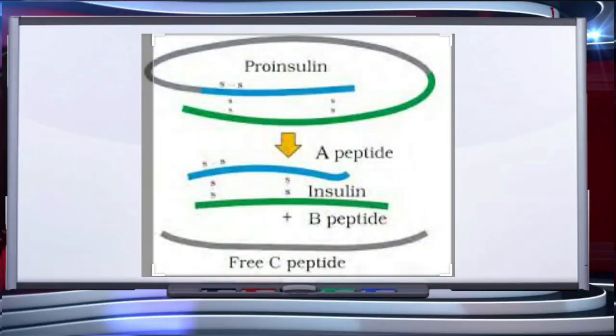Insulin used for diabetes was earlier extracted from the pancreas of slaughtered cattle and pigs, which caused allergy or other reactions in some patients. Insulin consists of two short polypeptide chains — chain A and chain B — linked together by disulfide bridges, as shown in this figure.